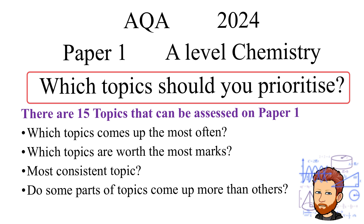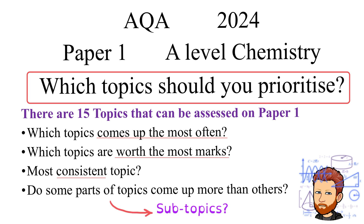Since there are 15 topics that can be assessed on Paper 1, it will be really useful to know which topics come up the most often, and also which topics are worth the most marks on average across the papers. Is there a topic that comes up more consistently than others, and from within these larger topics, are there some parts that come up more often than others?